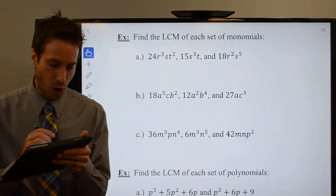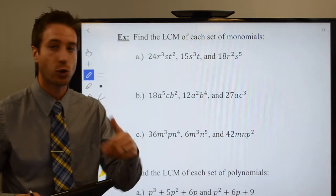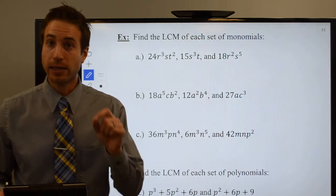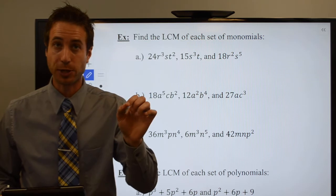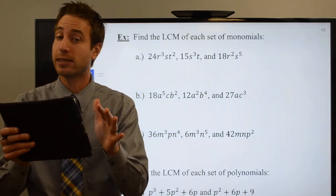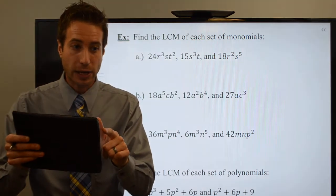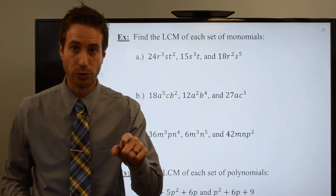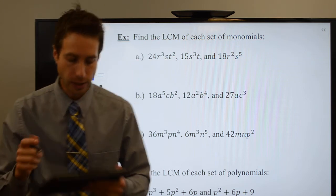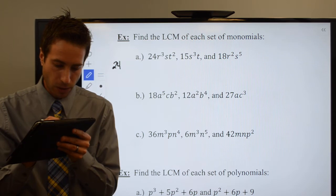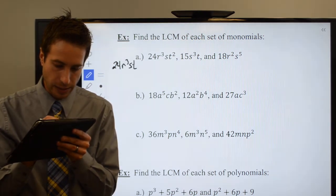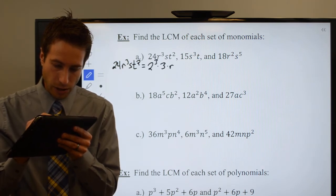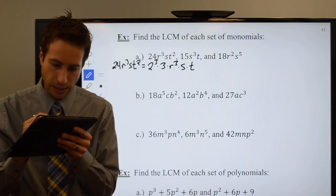What we've got here is 24r³st². I need to factor that. Well, 24 is 8 times 3, right? But the 8 can be split into 2 times 4, and the 4 can be split into 2 times 2. So if you followed me there, what you have is 2 times 2 times 2 times 3, or 2³ times 3. So 24r³st² is equal to 2³ times 3 times r³ times s times t².